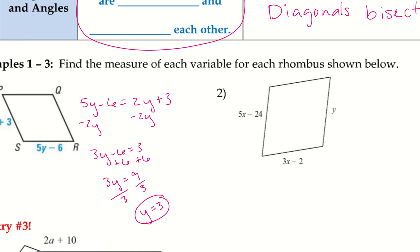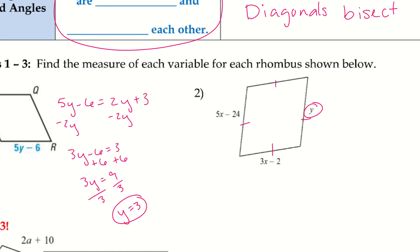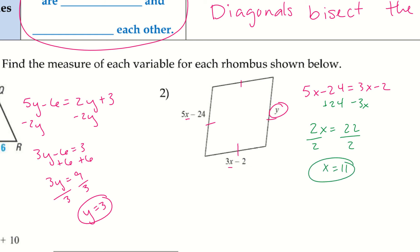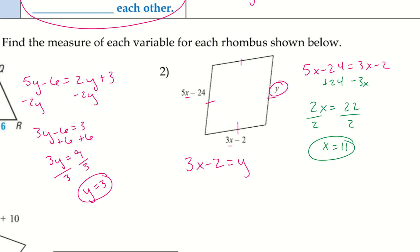For number two, all sides are congruent, but I need to solve for x first. Setting 5x − 24 equal to 3x − 2, subtracting 3x and adding 24 to both sides gives 2x = 22, so x = 11. Now that I know x, I can find y: using the side 3x − 2, that's 3(11) − 2 = 33 − 2 = 31, so y = 31.